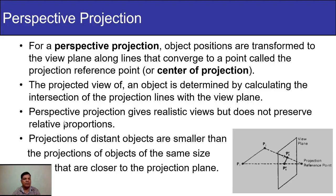Perspective projection gives realistic views but does not preserve relative proportions. We get a realistic view of an image but the dimensions of the object are not preserved, so perspective projection is not applied in engineering applications because the drawing dimensions of an object change. Also, projections of distant objects are smaller than projections of objects of the same size that are closer to the projection plane.